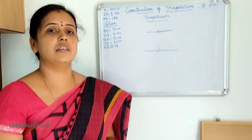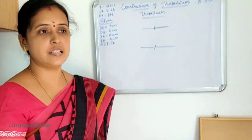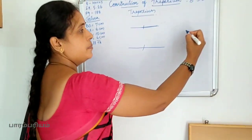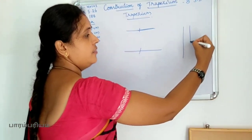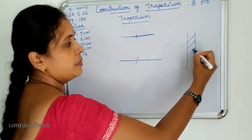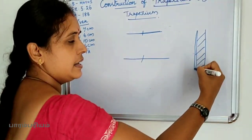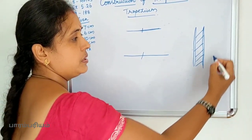Parallel means two lines that never meet. For example, you can see a railway track — the two rails form a parallel shape.